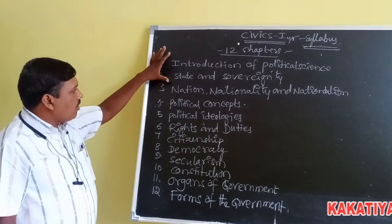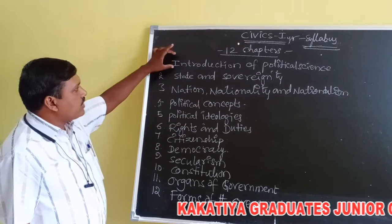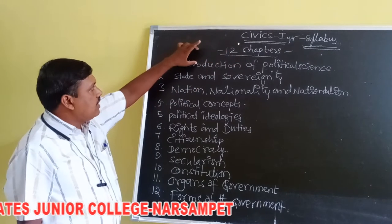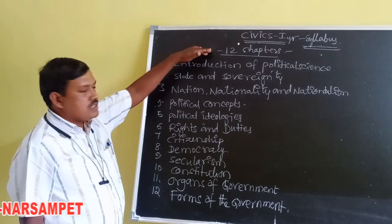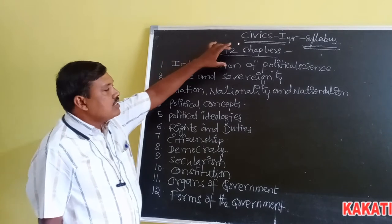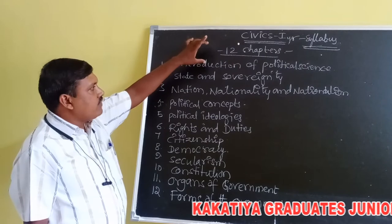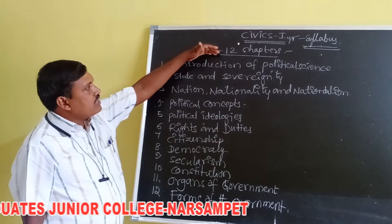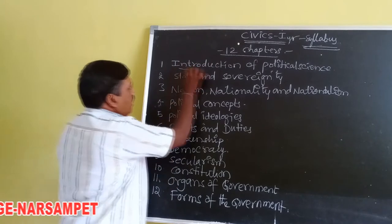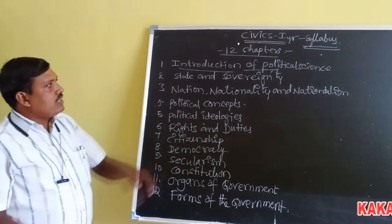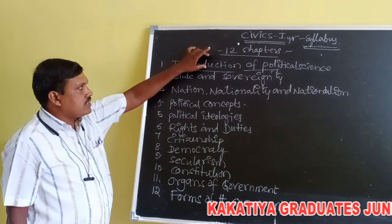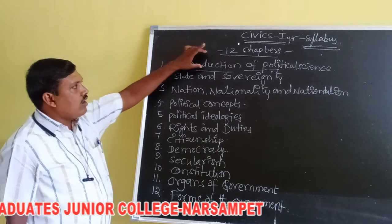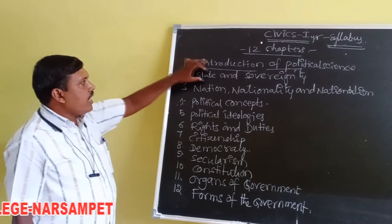We are going to study all 12 chapters in brief. In Chapter 1, Introduction to Political Science, we first need to know what civics means. The word civics is derived from the Greek word 'polis,' which means city-states. We will cover the origin and definitions of civics, the nature, scope, and significance of political science, and its relation to other social sciences like sociology, history, and economics.